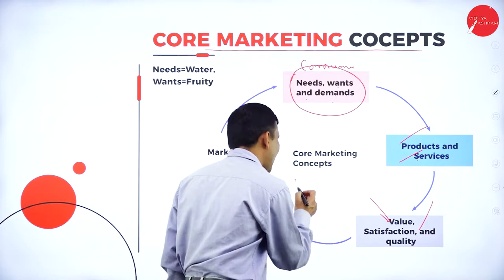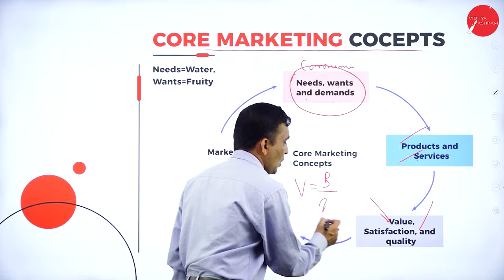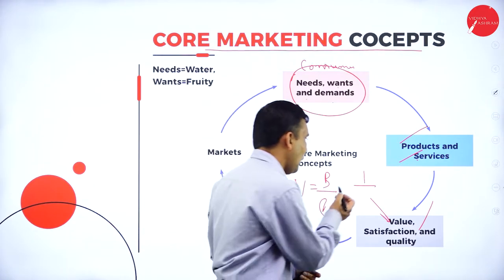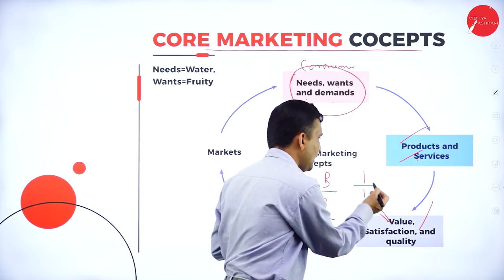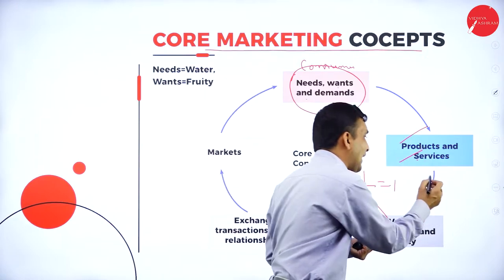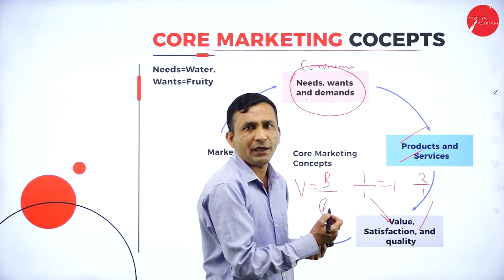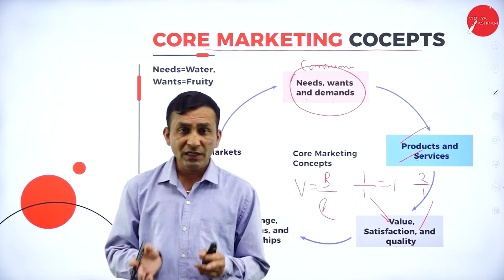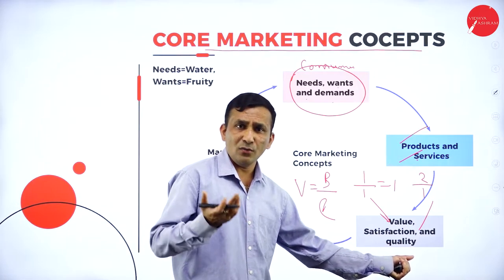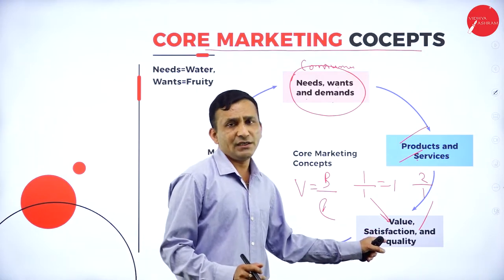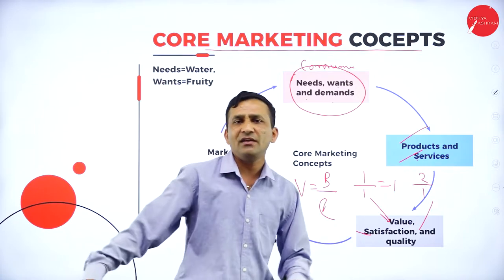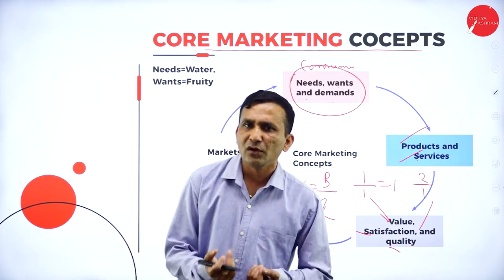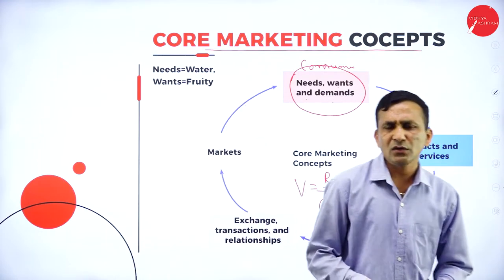How do we calculate value? Very simple: benefits divided by cost or price. If only one benefit is provided and the price is 1, value = 1/1 = 1. If you add 2 values and the price is 1, the value increases. Satisfaction is completely depending on the consumer. The degree of satisfaction — how the consumers are satisfied — you must know the satisfaction level. Quality is very important — what kind of quality you are maintaining towards your product or service.